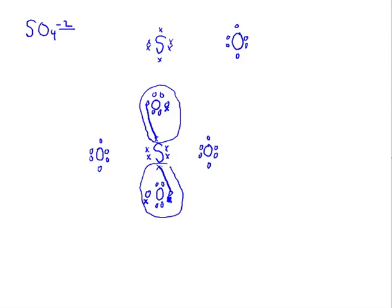Now, what happens to the remaining electrons on sulfur? The electron pair on sulfur is going to break up and form a bond with an electron from oxygen, forming a double bond with that oxygen. On the left side, those electrons will also be involved in forming a double bond with the corresponding oxygen. I'm going to redraw the Lewis dot structure to show this clearly.